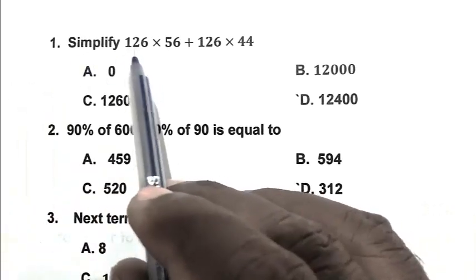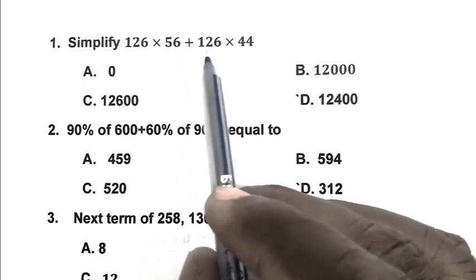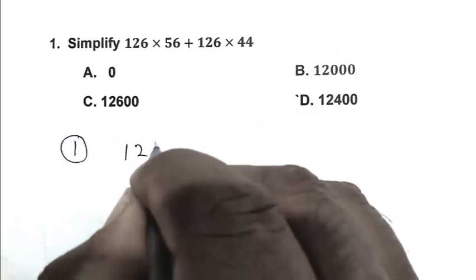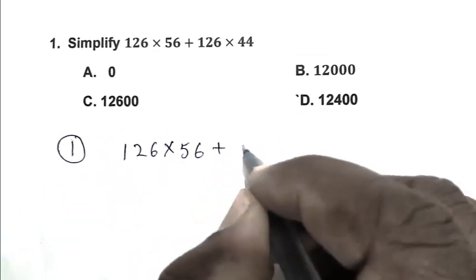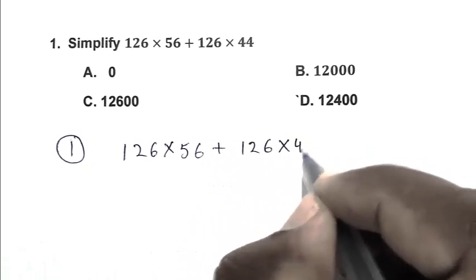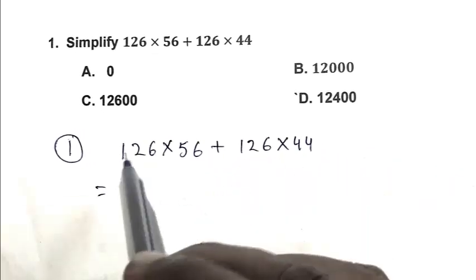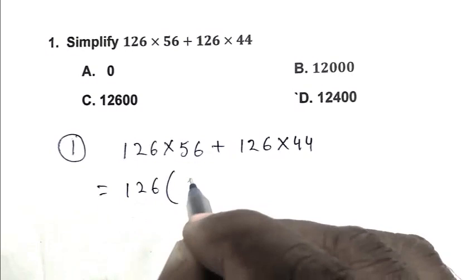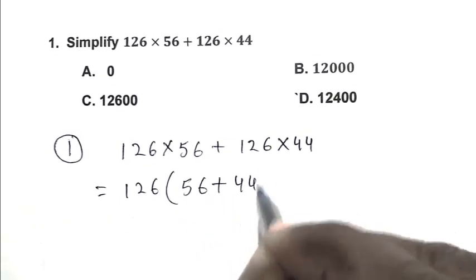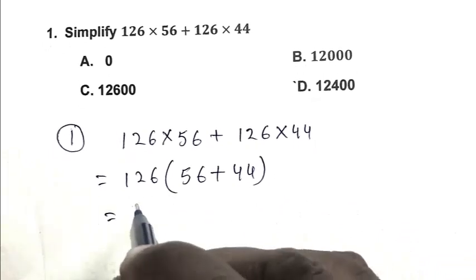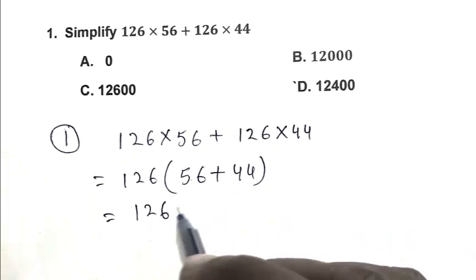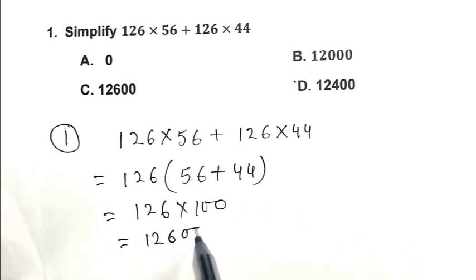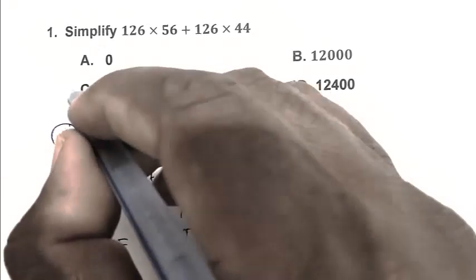Question number 1. Simplify 126 multiplied by 56 plus 126 multiplied by 44. So we solve it 126 multiplied by 56 plus 126 multiplied by 44. First we take 126 as a common. So 126 times 56 plus 44. 126 we add these two we get 100. So 126 into 100 is 12600. So C is the right answer.